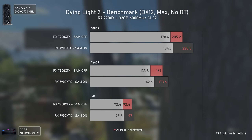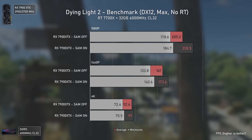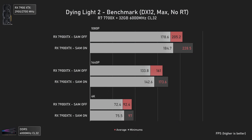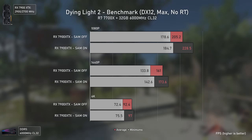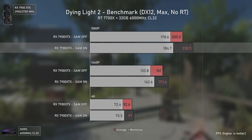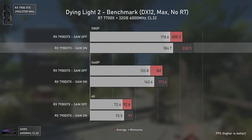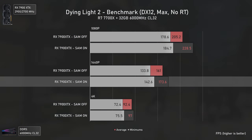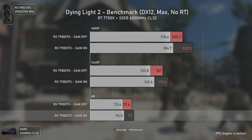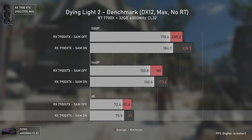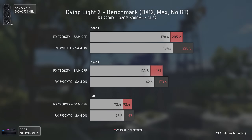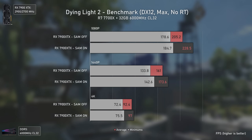Dying Light 2 is another new addition with its recently added built-in benchmark. I wasn't expecting much of a performance uplift since it is an Nvidia-sponsored title, but I was wrong. We got an 11% increase in average FPS at 1080p, 8% at 1440p, and 5% at 4K — which is around the performance some overclocking settings would bring in most games, but without the overclocking part. Overall, great results.